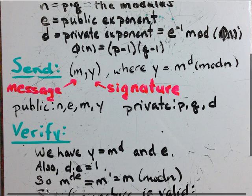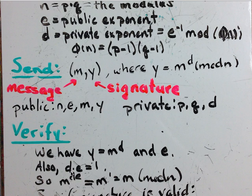So if we take M to the D E, that will equal M to the 1 because D times E equals 1, which is just the same thing as M the message.